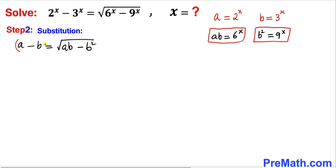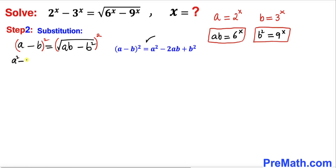Now let's square both sides of this equation. On the left hand side we apply the identity (a minus b)^2, giving a squared minus 2ab plus b squared. On the right hand side the square and square root undo each other, giving ab minus b squared.